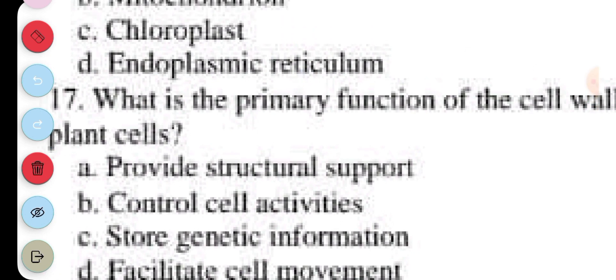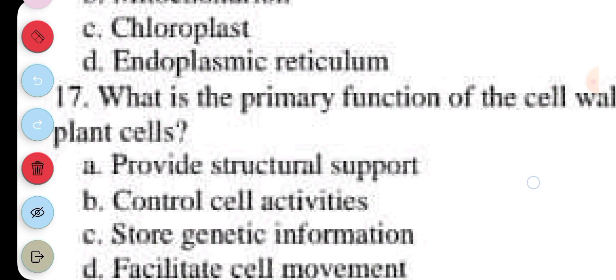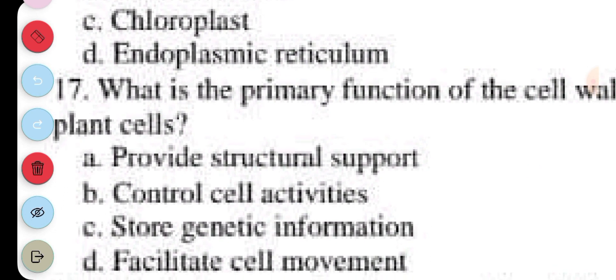Question 17. What is the primary function of the cell wall in plant cells? A. Provide structural support, B. Control cell activities, C. Store genetic information, D. Facilitate cell movement. The answer to question 17 is A. Provide structural support.